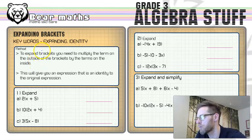So the method states to expand brackets, you need to multiply the term on the outside of the brackets by the terms on the inside. And then this will give you an expression that's an identity to the original expression.